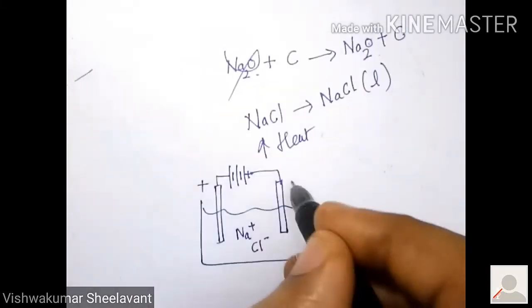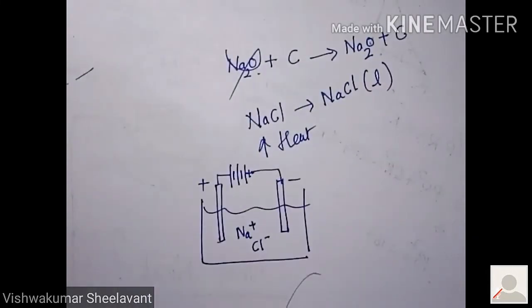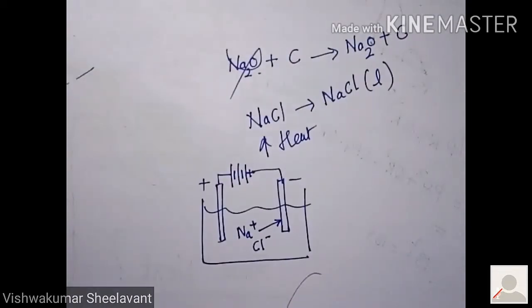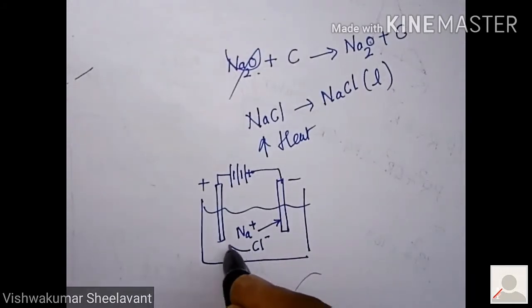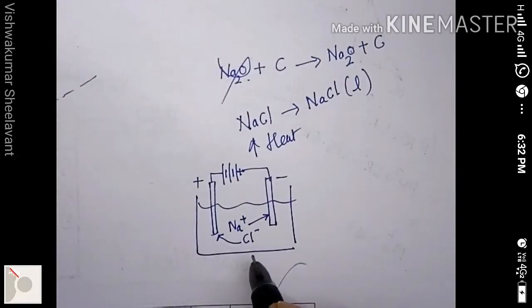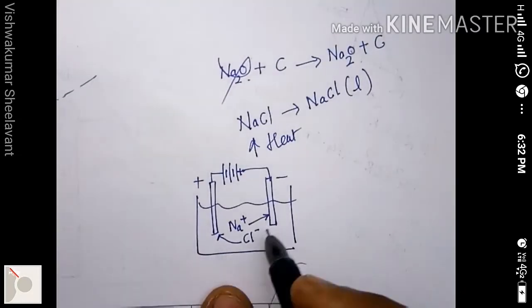Now this is plus and this is minus. Na will go towards cathode and get deposited there. And Cl will go to anode. And there, chlorine gas will be formed. So what happens at anode and cathode, we will see.